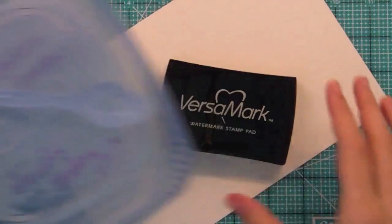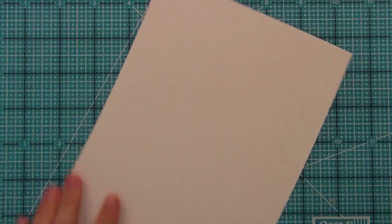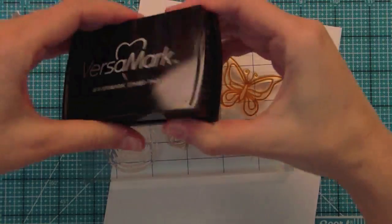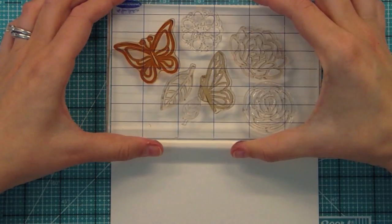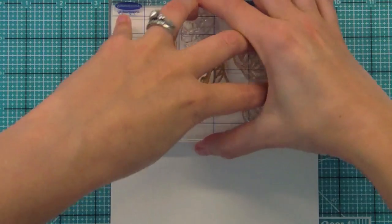Right now we have some Versamark and some white heat embossing powder and I'm going to go ahead and ink them up in Versamark and stamp them. I have a hard time seeing Versamark on watercolor paper so I like putting them all on one block and stamping them that way I don't stamp them on top of each other.